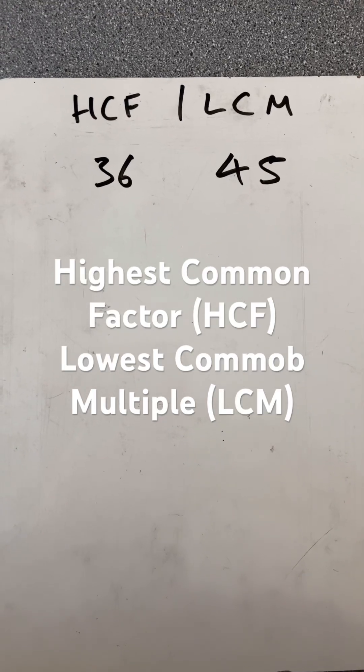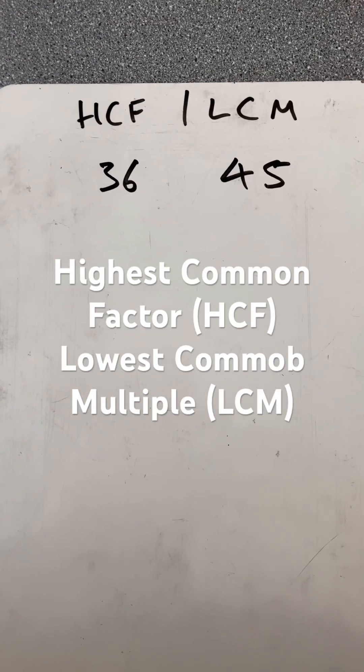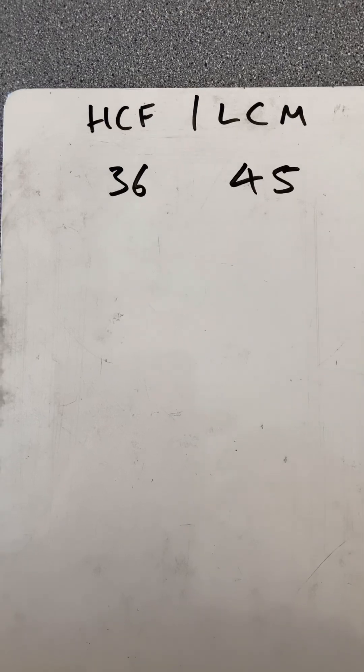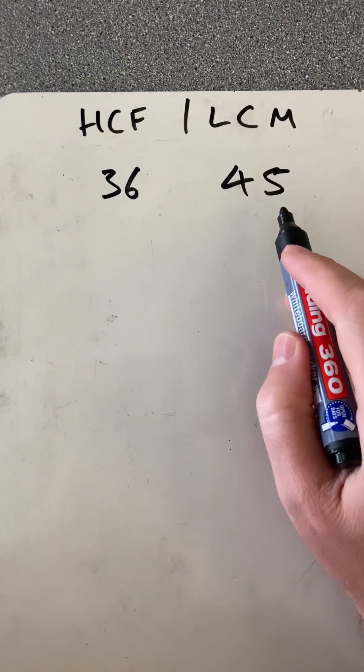Hello and welcome to Martin Maths, doing the highest common factor and lowest common multiple of two numbers using the table method. I'm using 36 and 45 to demonstrate this.